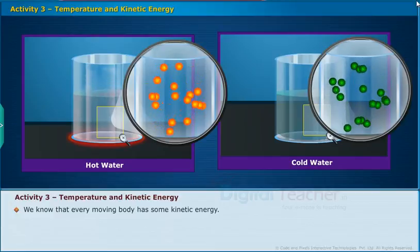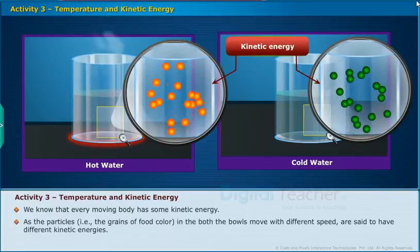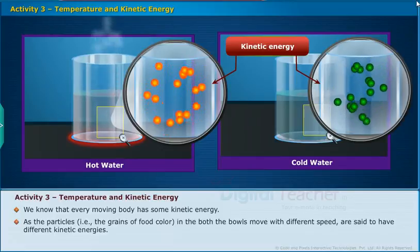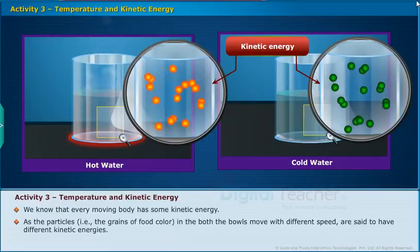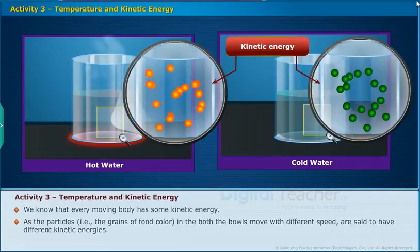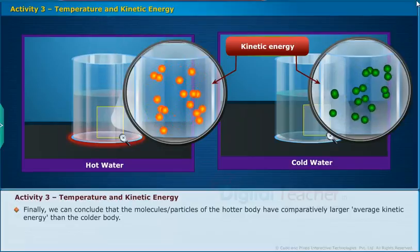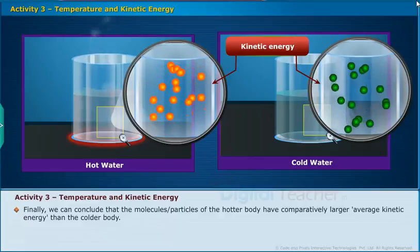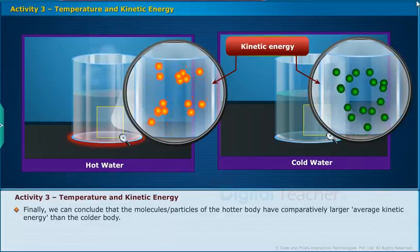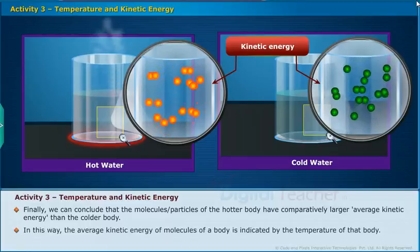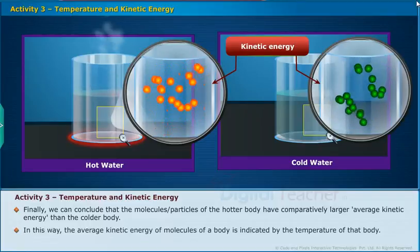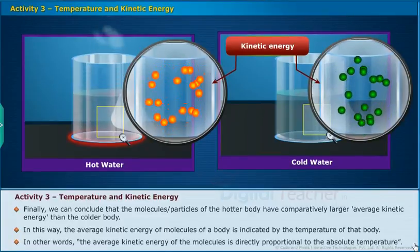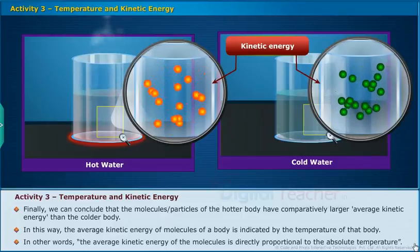We know that every moving body has some kinetic energy. The particles — that is, the grains of food color — in both bowls move with different speeds and are said to have different kinetic energies. We can conclude that the molecules or particles of the hotter body have comparatively larger average kinetic energy than those of the colder body. In this way, the average kinetic energy of molecules of a body is indicated by the temperature of that body. In other words, the average kinetic energy of molecules is directly proportional to the absolute temperature.